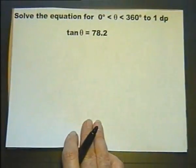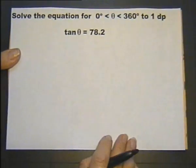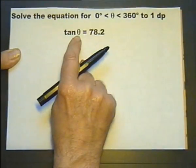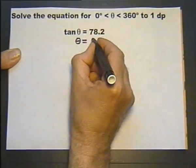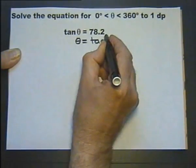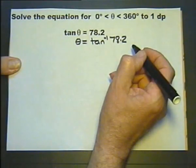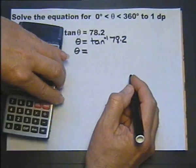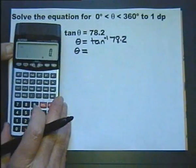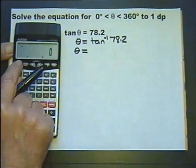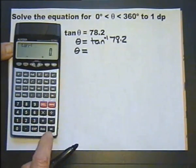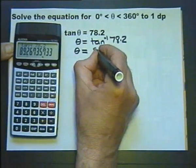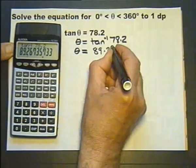Solve for values of theta between 0 and 360 degrees. Tangent, so if we inverse tangent of tangent theta, we get theta. So if we inverse tangent of the 78.2, we'll get the value of theta in degrees. Still in degree mode, I have to keep thinking about that just to make sure. Inverse tangent 78.2 equals, and we get an angle of 89.3 degrees to one decimal place.